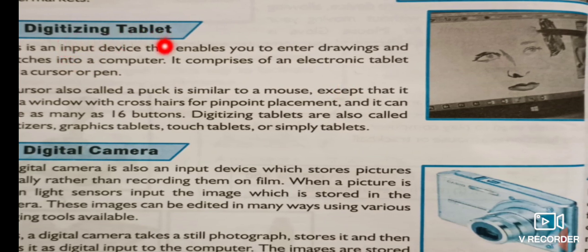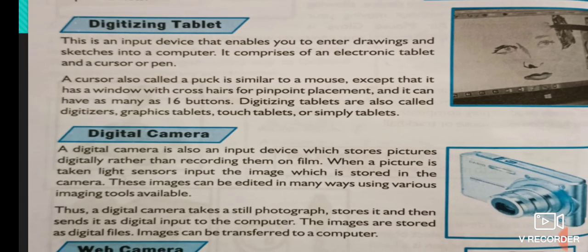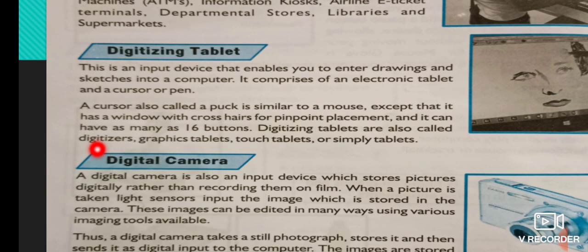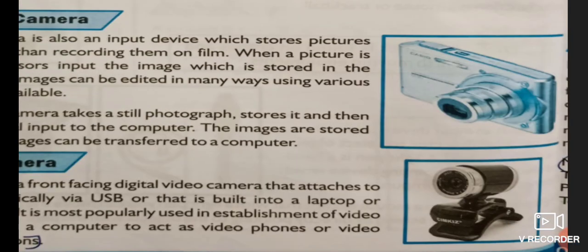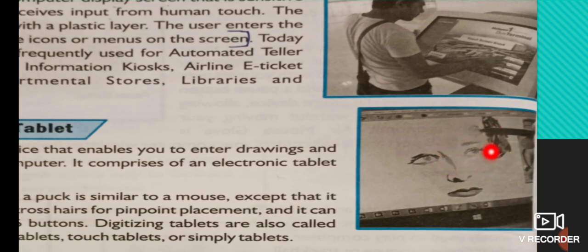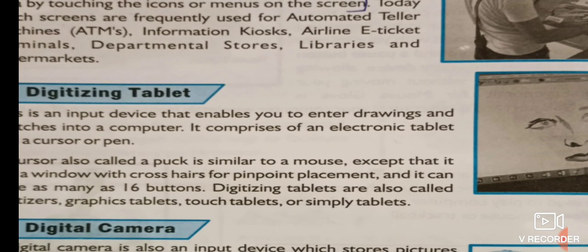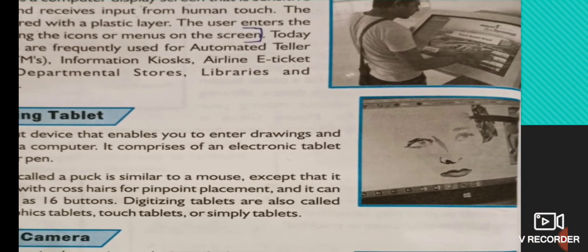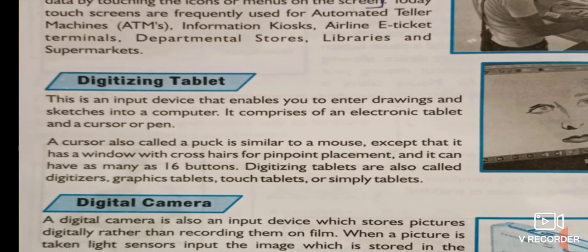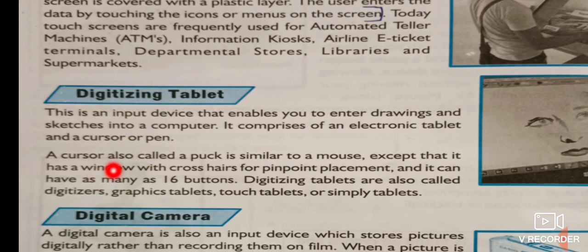The second input device we are going to see today is the digitizing tablet — otherwise called a tab, digitizer, graphic tablet, touch tablet, or simply a tablet. Using this digitizing tablet you can draw a picture or sketch any picture using the pen. It comprises an electronic tablet with a cursor or a pen. The cursor in a digitizing tablet is called a puck — P-U-C-K — which is similar to your mouse and can have 16 buttons, using which you can draw or sketch anything into your computer.